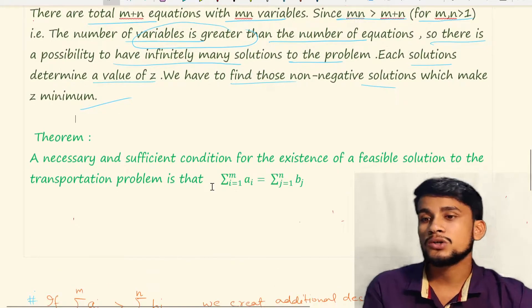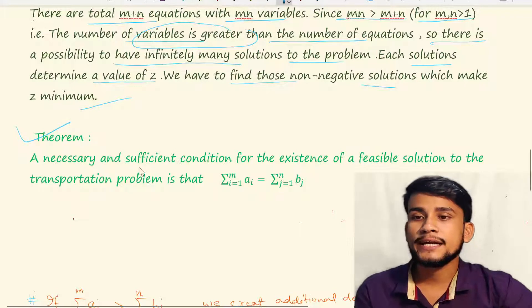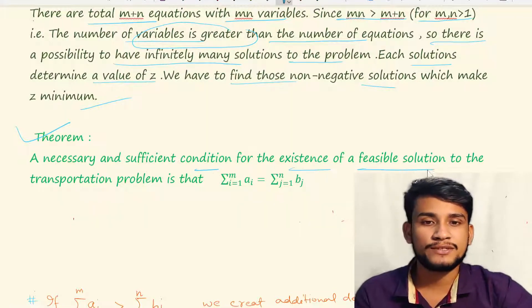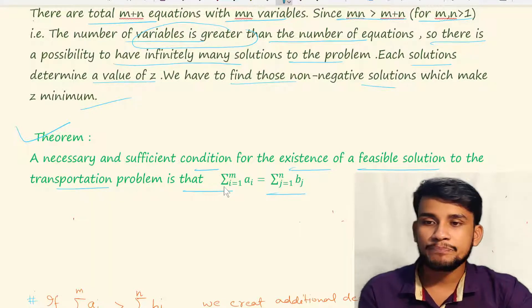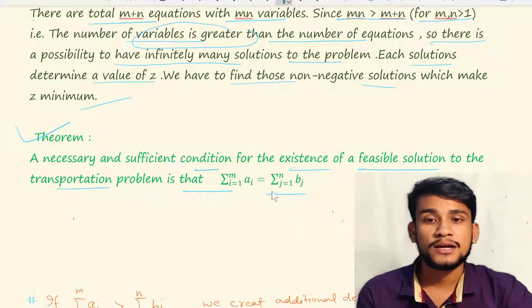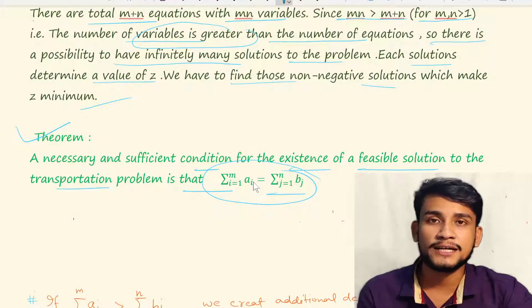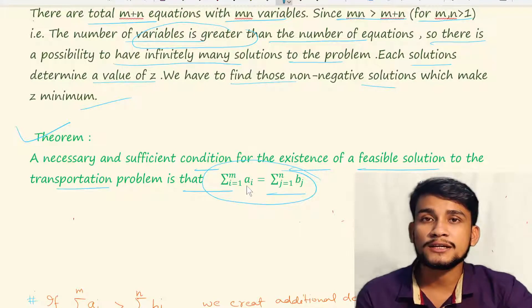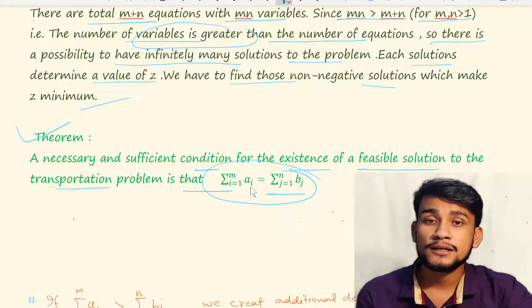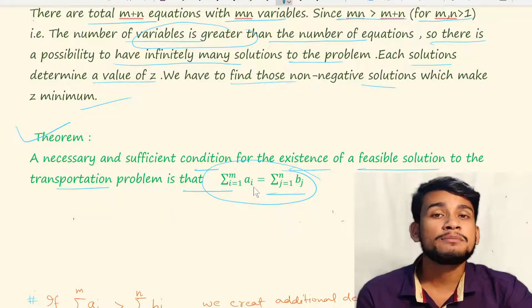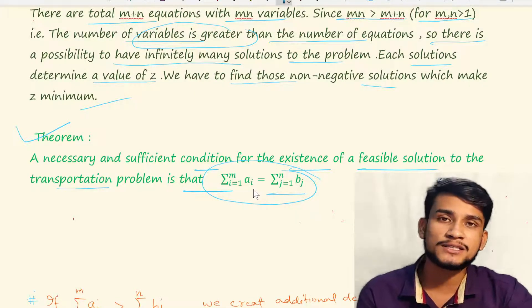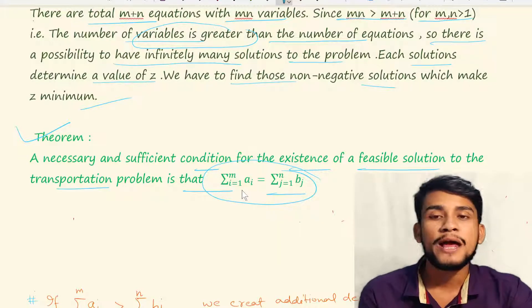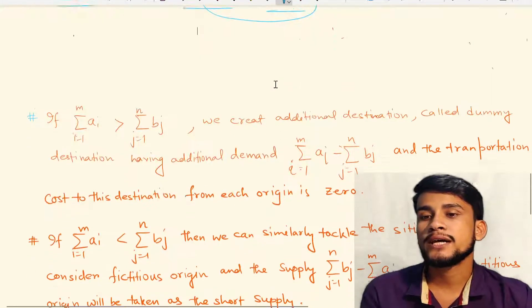A theorem states the necessary and sufficient condition for the existence of a feasible solution to the transportation problem is that Σa_i = Σb_j. That is, in the case of a balanced transportation problem there must be a feasible solution. To get a feasible solution, the transportation problem must be balanced.